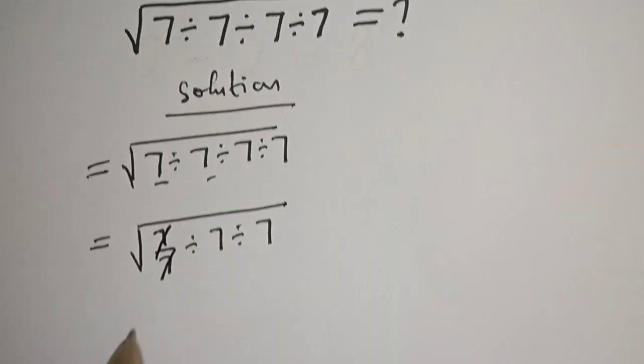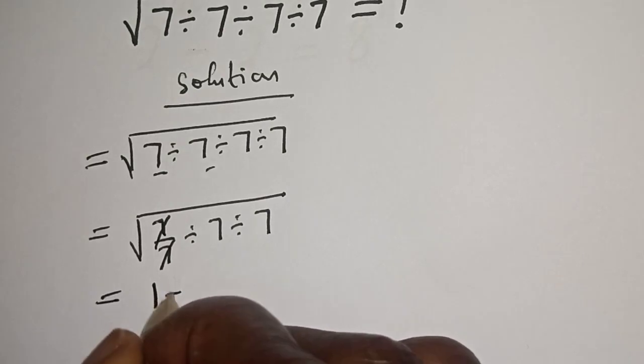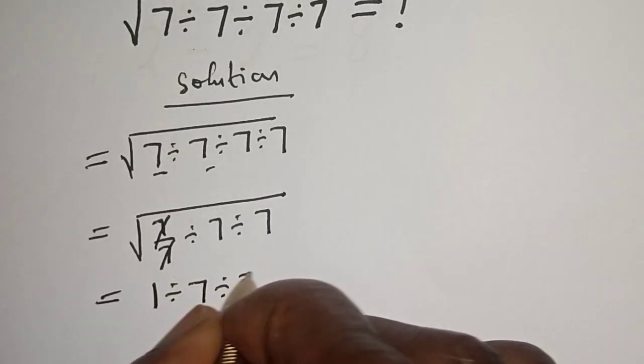This will cancel this. This is equal to square root of 1 divided by 7 divided by 7.